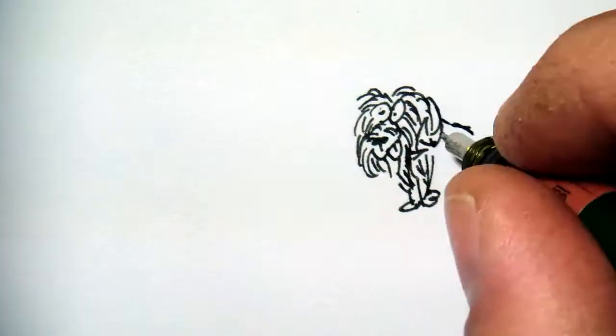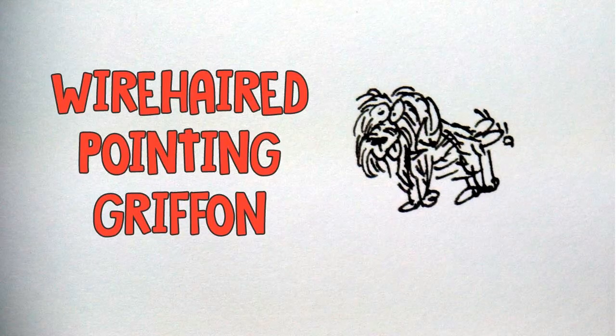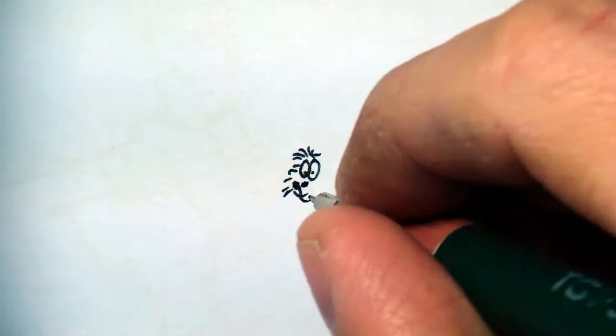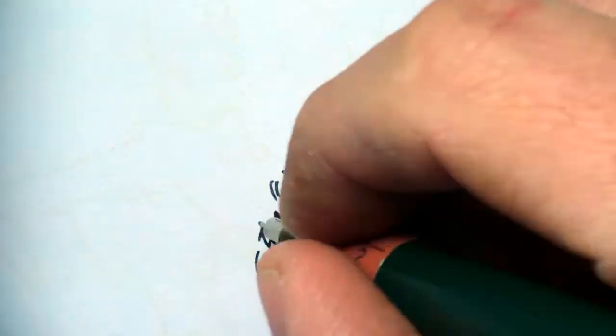A short illustrated description of the wire-haired pointing griffon, the Cortals griffon. This griffon is a pointing dog.